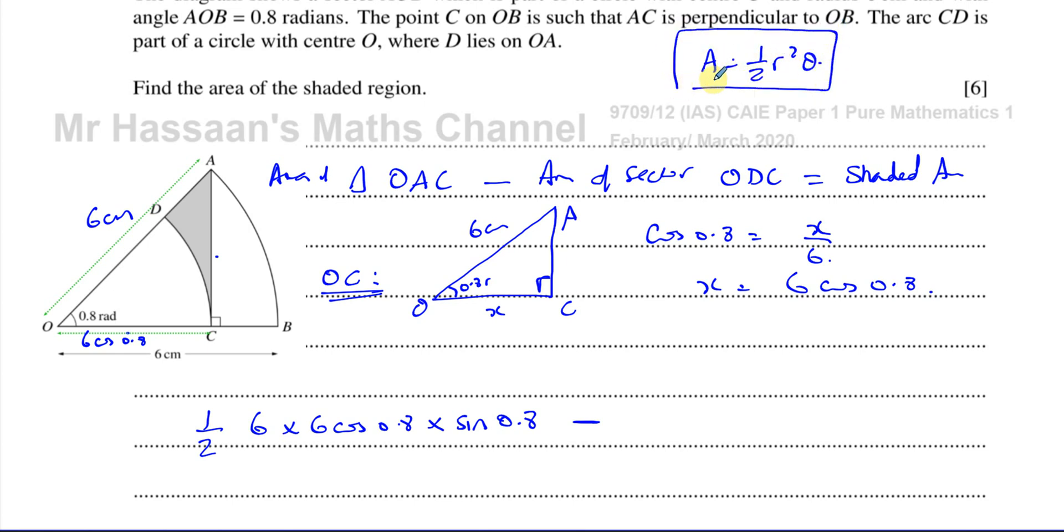Now, the area of the sector is given by the formula which is given in the formula book half R squared theta. That is the area of a sector when we know the angle here is in radians. When it's in radians we use this formula. So we can write this as minus a half times R squared. Now the radius of this small sector is not 6 but it's 6 cosine 0.8. 6 cosine 0.8 squared